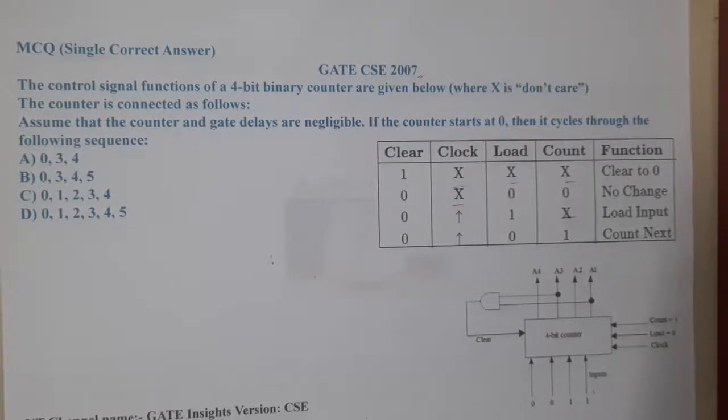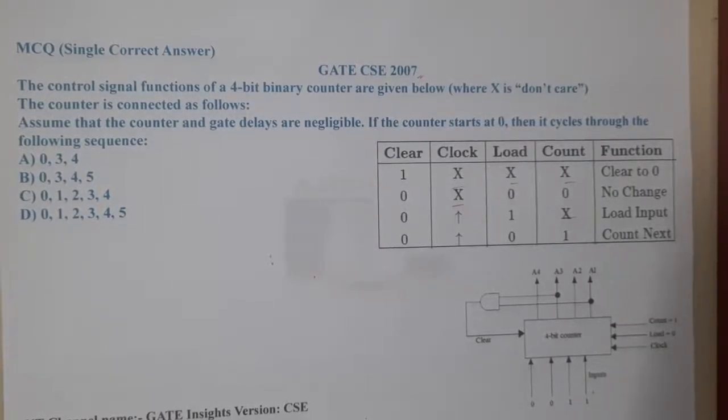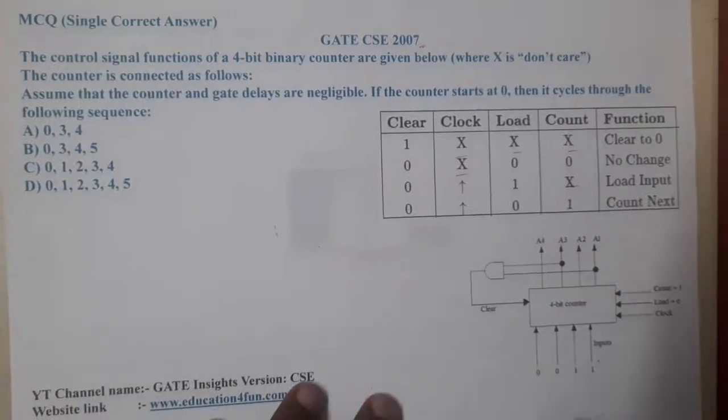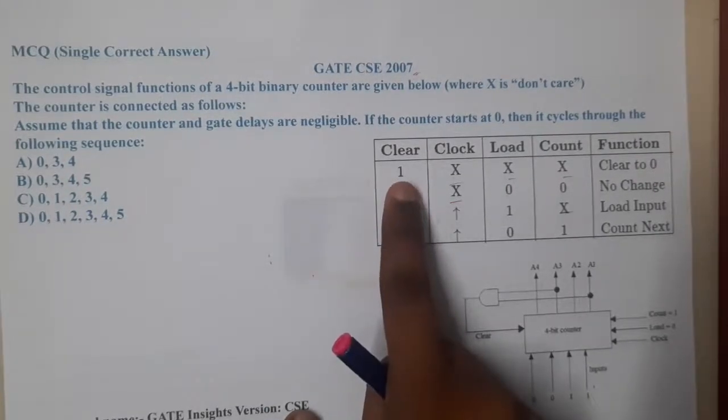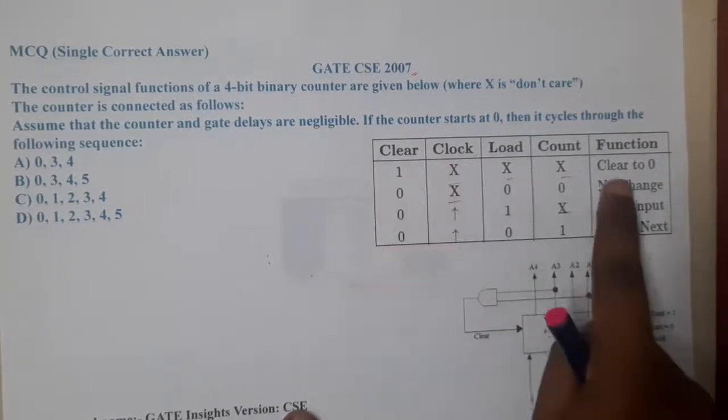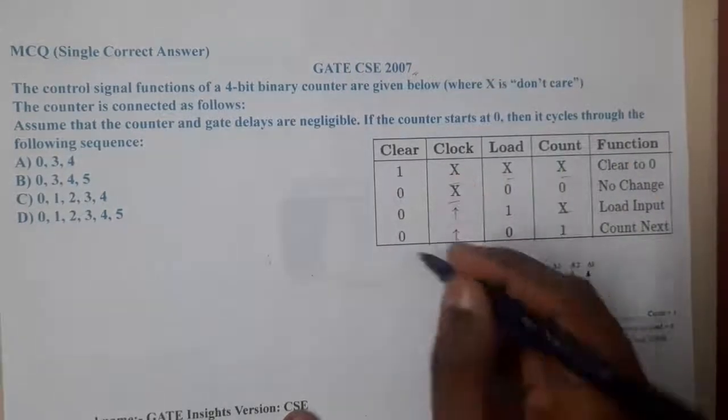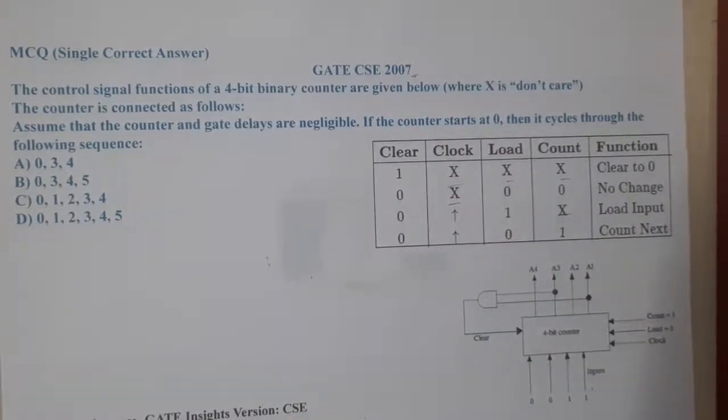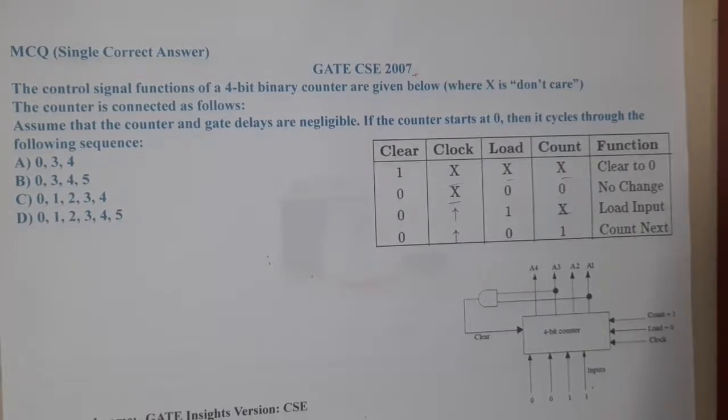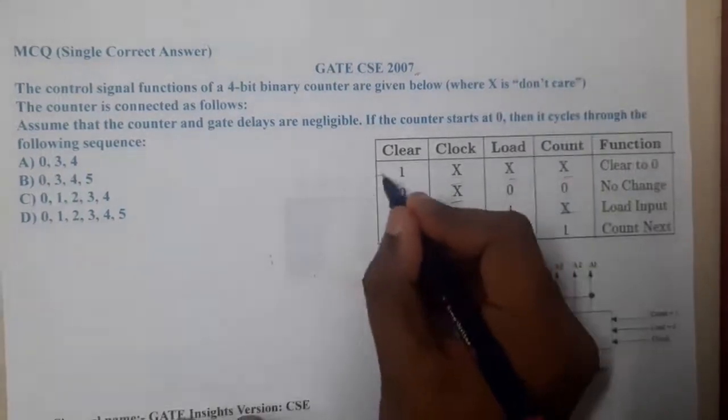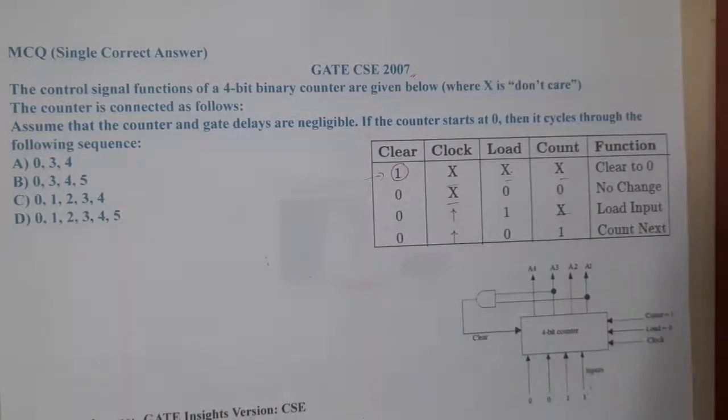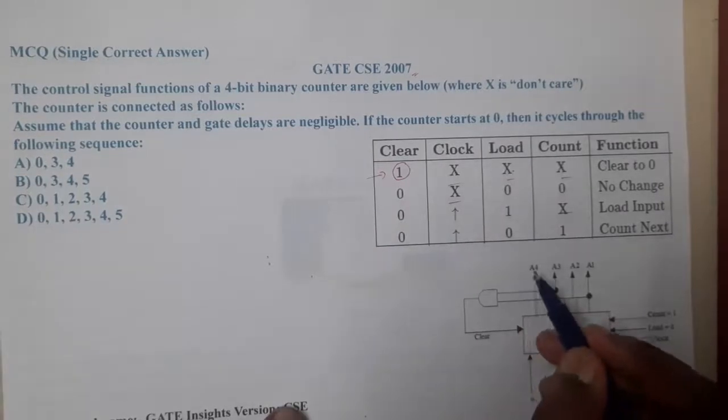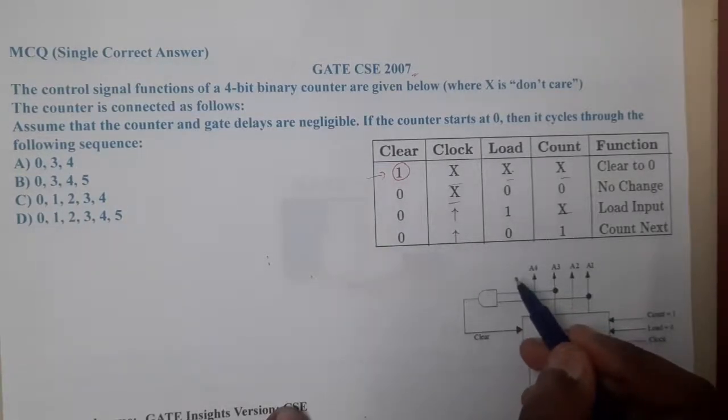The input is given from bottom. Here we have clear equal to 1. Whenever the clear pin is 1, it is going to clear it. It has highest priority. I think we already discussed priority encoders. Whenever some bit is 1 and rest all are don't care means clear is having the highest priority.